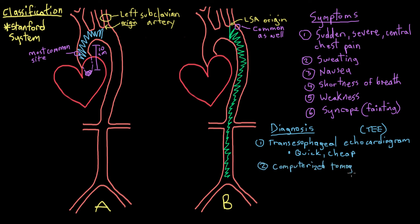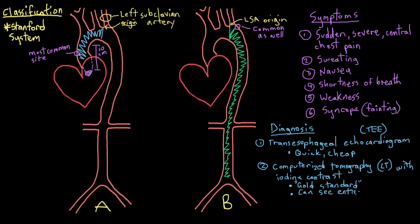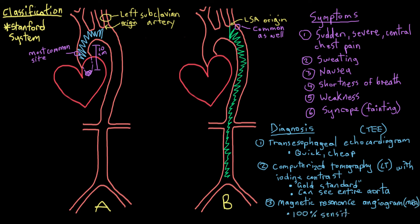A CT, or computerized tomography scan with contrast, is really the gold standard for diagnosing dissections. You can use it to image the entire length of the aorta, and you can inject a contrast liquid containing iodine into the patient's circulatory system to make the heart, aorta, and other blood vessels more visible on the CT images. A magnetic resonance angiogram, or MRA, is actually 100% sensitive and specific for picking up aortic dissections — meaning if there is a tear, the MRA will pick it up and allow you to accurately diagnose it. Even though an MRA is 100% sensitive and specific, a CT is still the gold standard because doing a CT comes with less risk to the patient than an MRA.